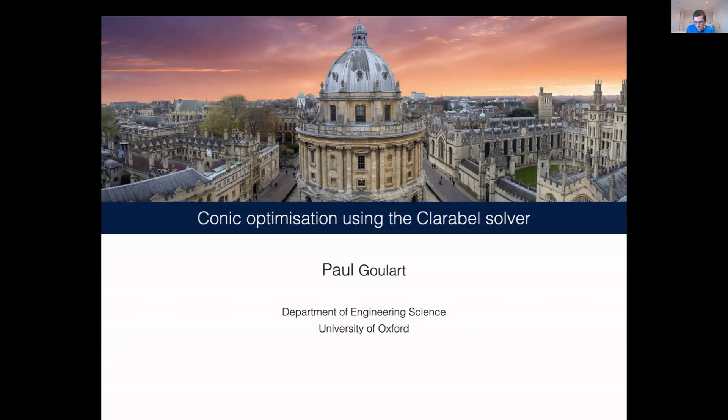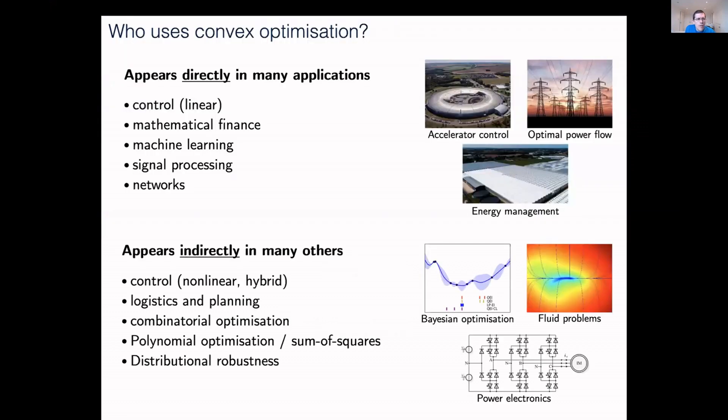First of all, why should you care about convex optimization and who uses it? Well, it appears in lots of different application domains, either directly or indirectly. By directly, I mean you have an application where you actually want to solve a convex optimization problem. I'm in the control engineering group, so we do it a lot for real-time optimal control.